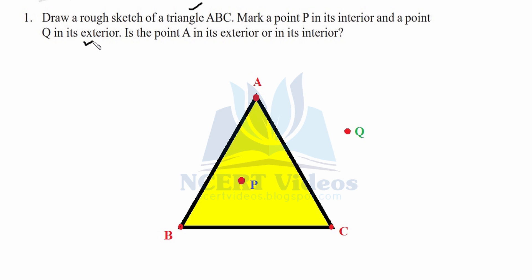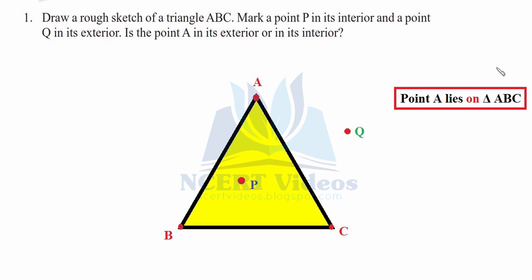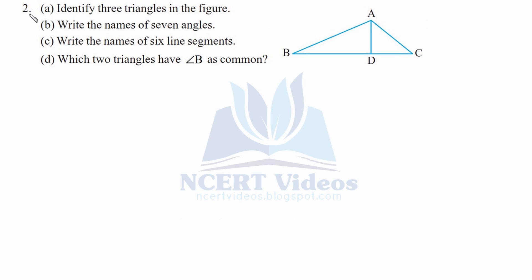Now Q is in the exterior. The question asks: is point A in the exterior or interior? It is neither in the exterior nor the interior — it lies on the triangle ABC itself. Similarly, B and C are also on the triangle. Therefore, point A lies on triangle ABC.